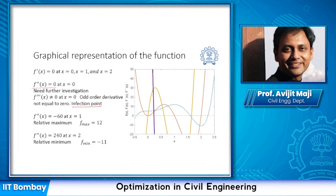Now let's look into the second point, x = 1. The second order derivative at x = 1 gives a non-zero value of negative 60. This negative 60 indicates that at x = 1 we have a relative maximum value, and the maximum function value is 12.